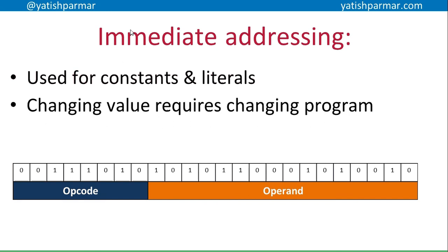The first memory technique to think about is immediate addressing. With immediate addressing, the actual data is contained within the operand. For example, if it was an add instruction, the opcode would say add and indicate that the operand is the data to be operated upon. That's not particularly useful though, because if you want to change the value, you have to change the program — the actual coding. The other thing that doesn't make it particularly useful is that other instructions in the program can't refer to this bit of data as well.